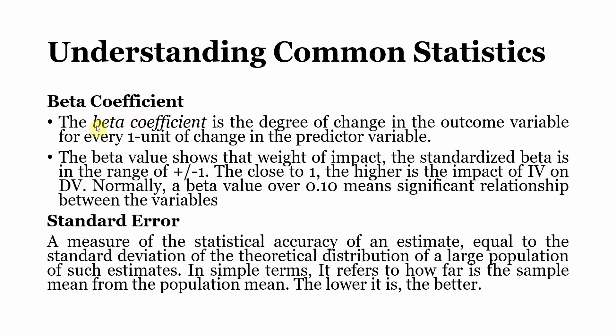The first one, the beta coefficient. The beta coefficient is the degree of change in the outcome variable, that is your dependent variable, for every one unit change in the predictor variable. This means that if I change the predictor variable by one unit, how much change is there going to be in the outcome variable? So this is your beta coefficient.